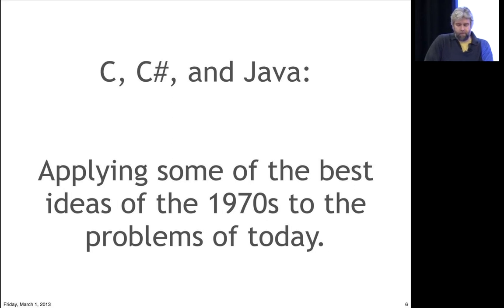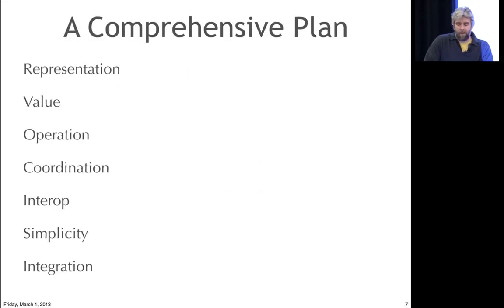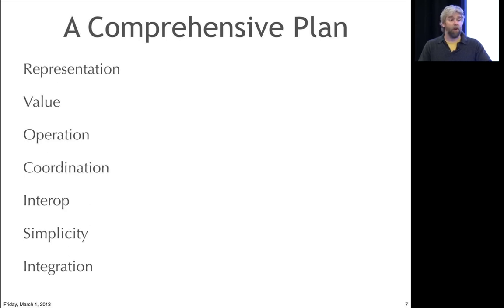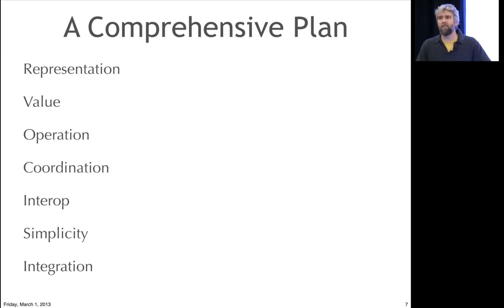What we need is a comprehensive plan of doing things differently. One part of that plan is a representation for data. We are living in a world where there are thousands of times more machines and thousands of times more connectivity than ever before, which means we have to move data around. And our data representations peak in capability at, I don't know, XML or JSON. We need to reconsider whether those representations are the best fit for this world.